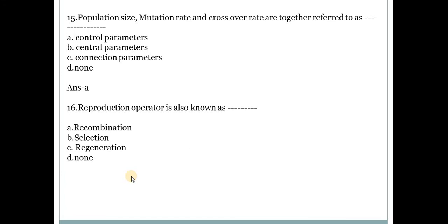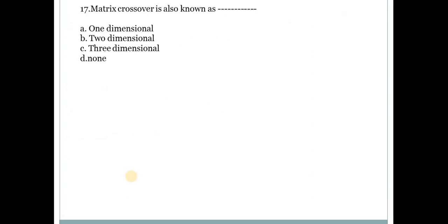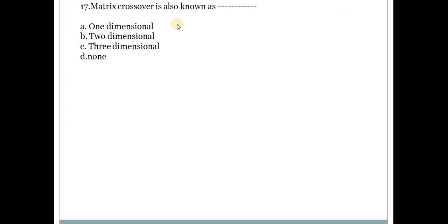Reproduction operator is also known as. Answer is B, selection. Another name for reproduction operator is selection operator. Matrix crossover is also known as. Answer is B, two-dimensional. Matrix crossover is also called as two-dimensional.